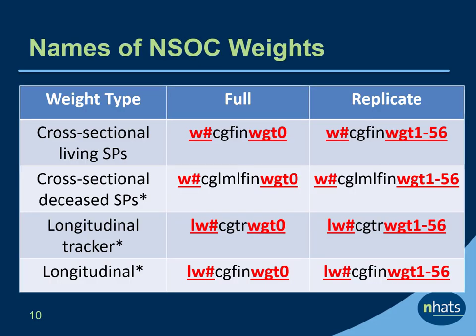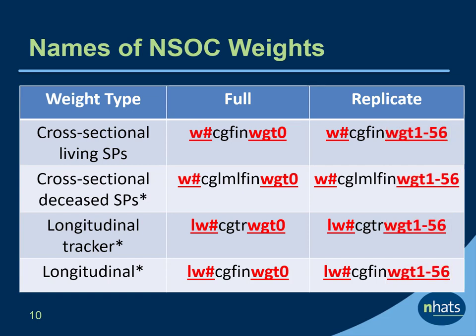NSOC weight variables have name specifications shown here. Cross-sectional caregiver sample weights start with W and longitudinal weights start with LW. They are then followed by the round number, designated here with the pound sign. All full sample weights end in WGT0, and all replicate weights end in WGT followed by the values 1 to 56. The type of weight is highlighted in the middle — for instance CGFIN, which is final for living SPs; CGLML, which is the last month of life; or CGTR for the tracker.